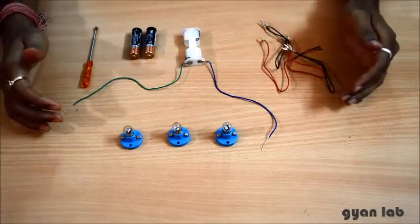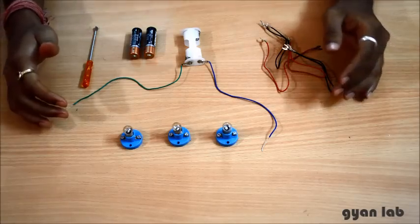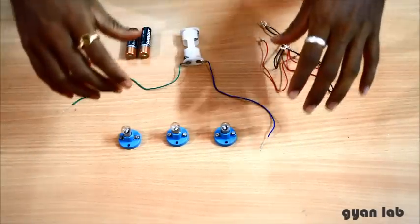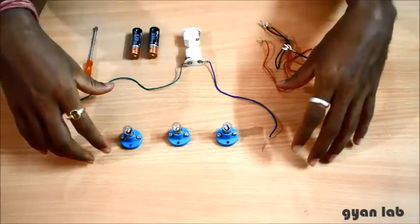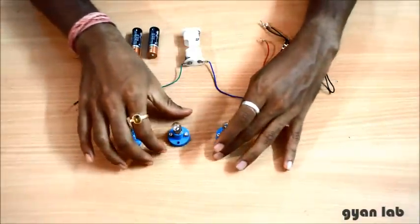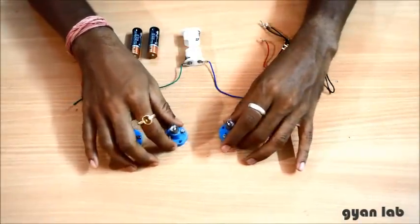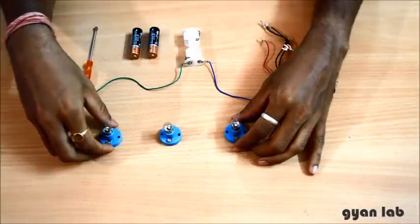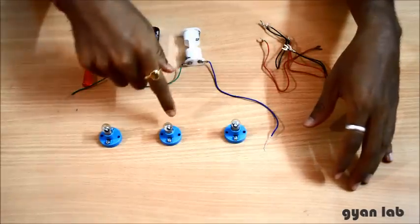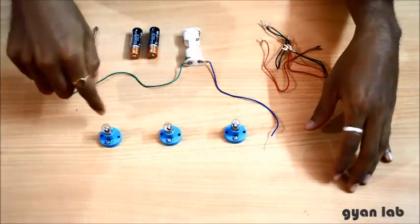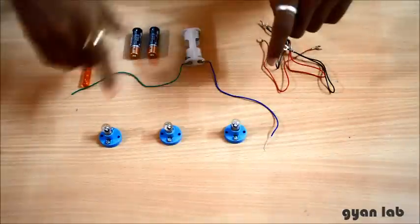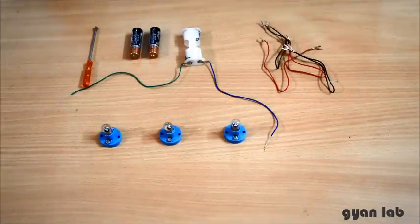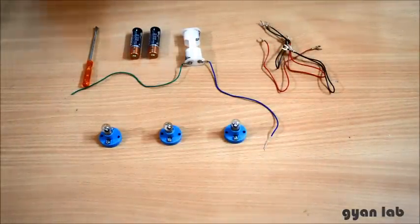So let's start building. The first thing that we need to understand here is that the components in this particular circuit are going to be parallel to each other. A simple way of doing and understanding it would be to keep the bulbs in this particular order so that we can connect the ends together.